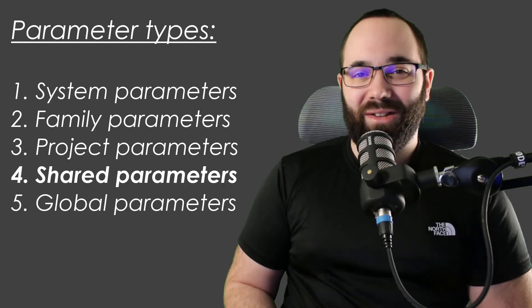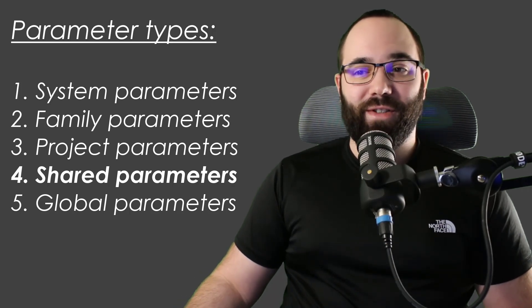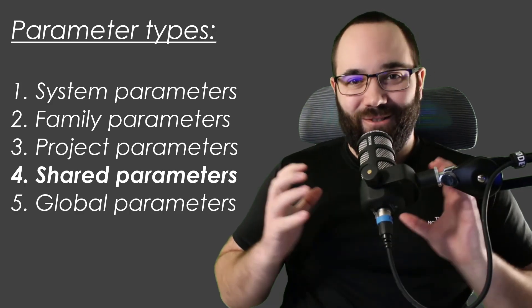Why are some parameters limiting? Because of their scope. A family parameter's scope is only inside that family. A project parameter's scope is inside that project — that's why we can schedule it, since schedules are inside projects. However, we cannot tag them because tags are different families created as independent instances. They can only recognize system parameters and won't recognize new customized project parameters. But there is a way around this — the magical shared parameter.